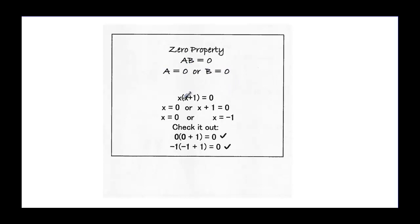Here's an example: x times (x plus one), those are factors set equal to zero. So we set x equal to zero, and then we set x plus one equal to zero. x equals zero is just zero. If I subtract one from both sides, I get x equals negative one. Checking x equals zero: zero times (zero plus one) is zero times one, and anything times zero is zero.